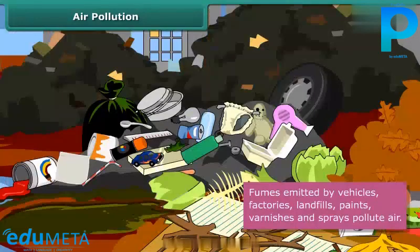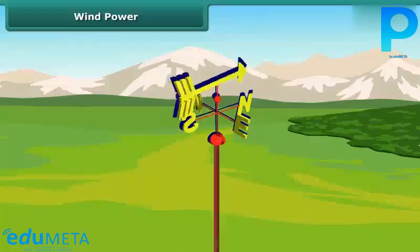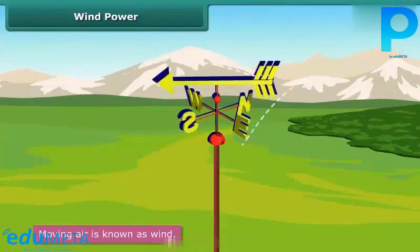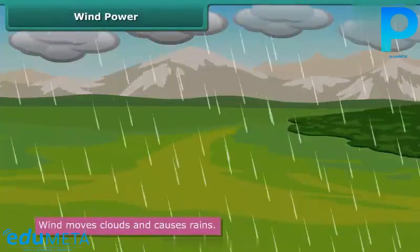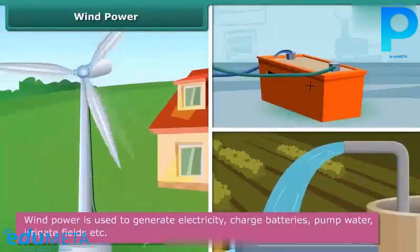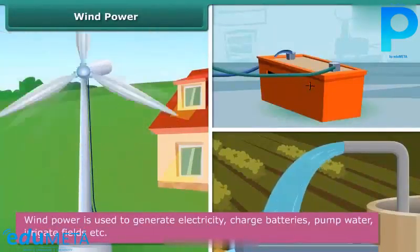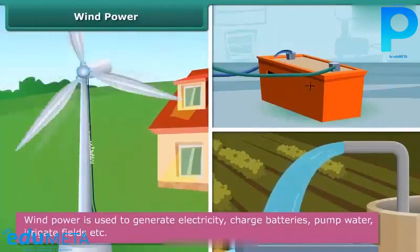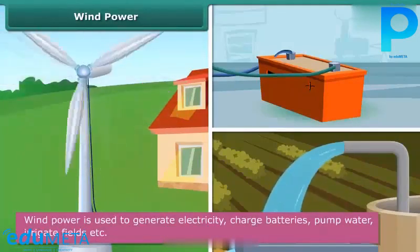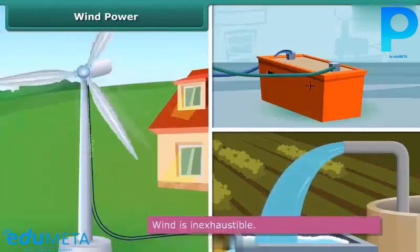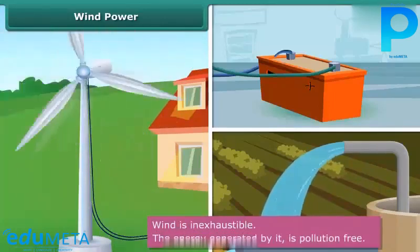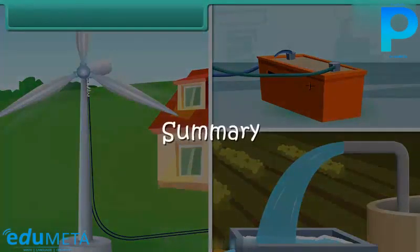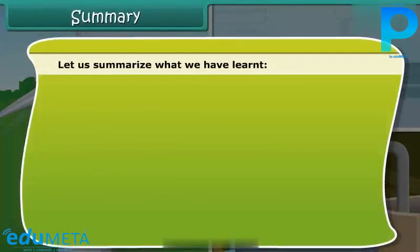Moving air is known as wind. Wind moves clouds and causes rain to be distributed evenly over the earth. Wind power is used to generate electricity, charge batteries, pump water, irrigate fields, etc. The biggest advantage in using wind power is that wind is an inexhaustible resource, and the energy generated by it is pollution free.